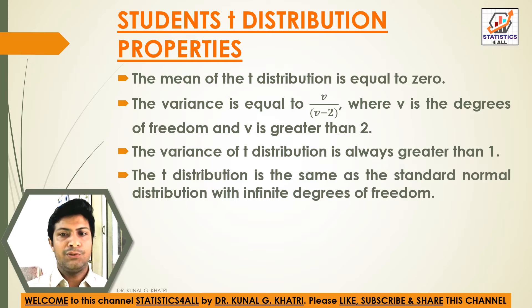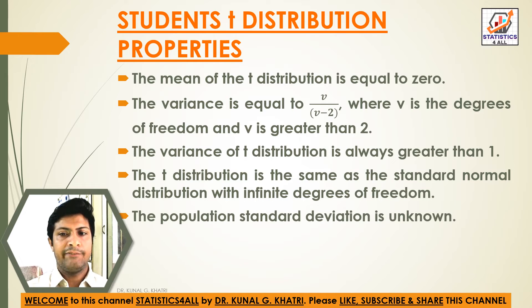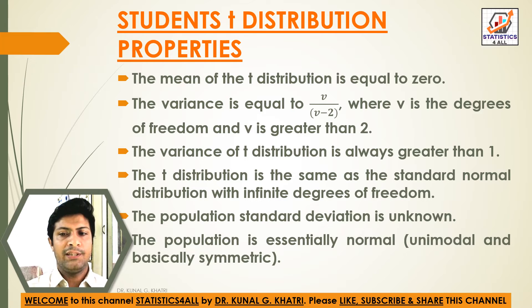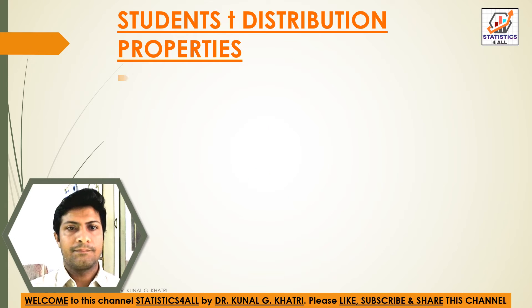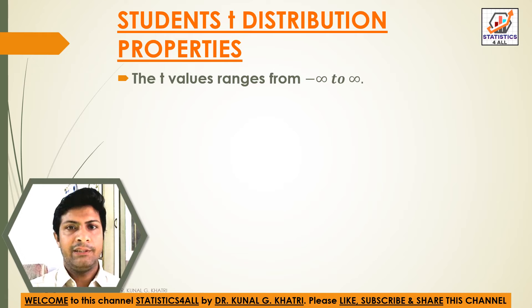The t-distribution is the same as the standard normal distribution with infinite degrees of freedom. The population standard deviation is unknown. The population is essentially normal — that is, unimodal and basically symmetric. The t-distribution is symmetrical about the mean. The t values range from minus infinity to infinity.